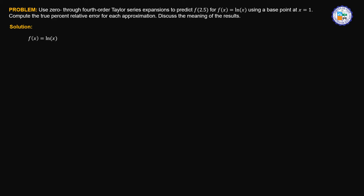We need to know the first derivative. In this case, it is equal to 1 over x. The second derivative is equal to negative 1 over x squared. The third derivative is equal to 2 over x cubed. The fourth derivative is equal to negative 6 over x raised to 4. And the fifth derivative is equal to 24 over x raised to 5.